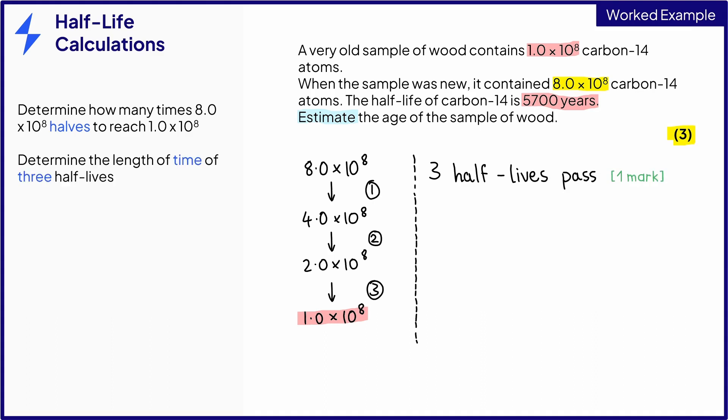Next, we need to calculate how long this has taken. This is a nice, simple calculation. If three half-lives have passed since the sample was new, its age must be three times the half-life of carbon-14. And the final mark is for writing the answer with the correct units. That's 17,100 years.